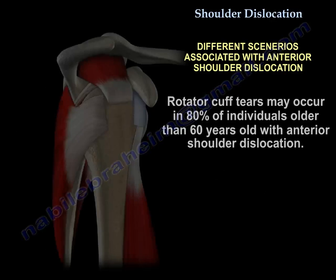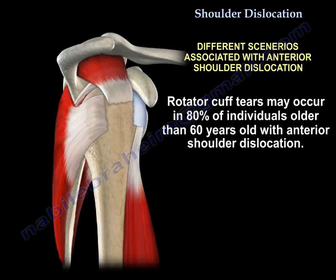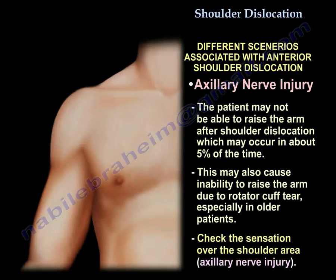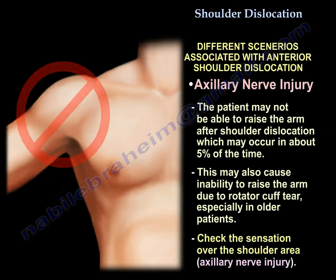If the patient is older — especially older than 60 years old — 80% may have a rotator cuff tear. The patient may not be able to raise the arm after shoulder dislocation, which can occur in about 5% of the time, or it may be due to a rotator cuff tear, especially if the patient is older.